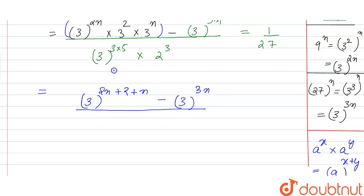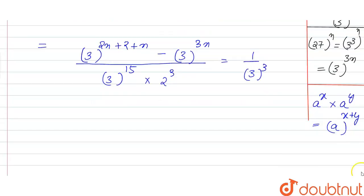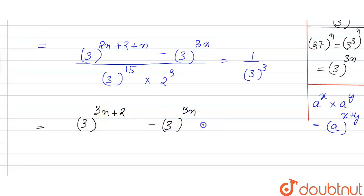The denominator is 3 raised to power 15 into 2 raised to power 3. The right-hand side, 1 by 27, can be written as 1 over 3 raised to power 3, since 27 is 3 into 3 into 3. So we have 3 raised to power 3n plus 2, minus 3 raised to power 3n, over 3 raised to power 15 into 2 raised to power 3, equal to 1 over 3 raised to power 3, and we cross multiply.